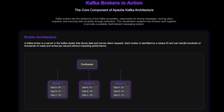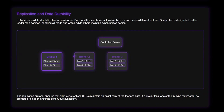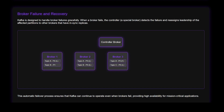Then come the brokers. These are the backbone of any Kafka cluster — the actual servers that store the data published by the producers. In a typical Kafka cluster, you'll have multiple brokers working together for redundancy and scalability. Each broker manages certain partitions of your data.